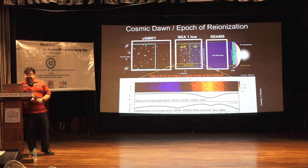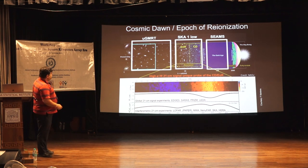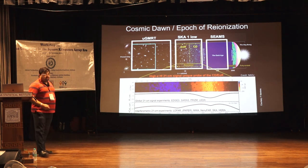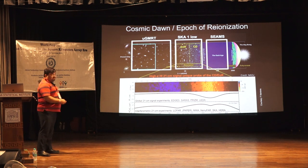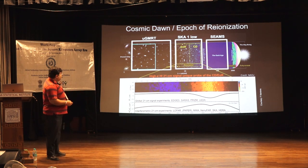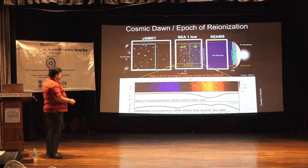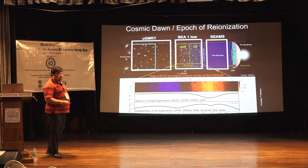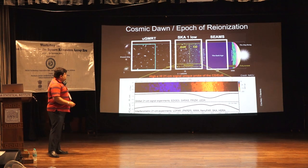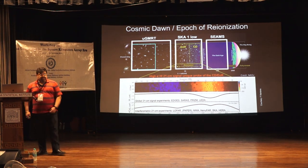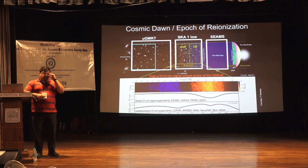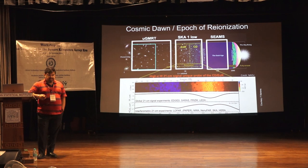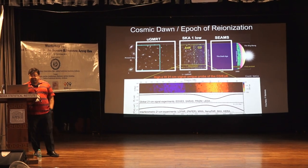Some of this talk will overlap with yesterday's talk. I will break it up into three parts: first, some work we have been doing with the upgraded GMRT in the post-EOR era; second, SKA-1-Low, which is mainly designed for the epoch of reionization to cosmic dawn window; and finally, space-based observations to look at dark ages. Dark age signals come below around 30 MHz, and Earth's ionosphere makes it completely impossible to observe from the ground.